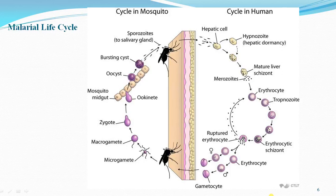Once the female Anopheles mosquito bites a healthy human, it releases sporozoites from its saliva into the blood. Within one hour, the sporozoites enter into the parenchymal cells of the liver, where they multiply and mature to form merozoites.